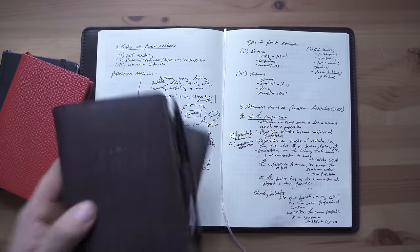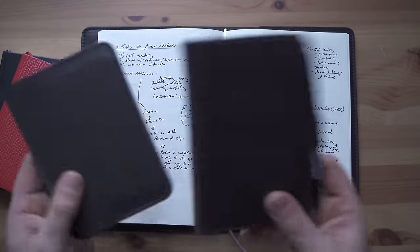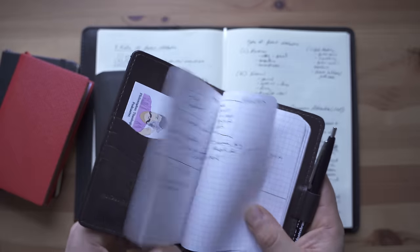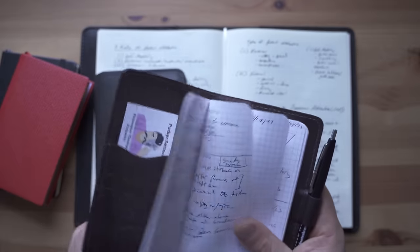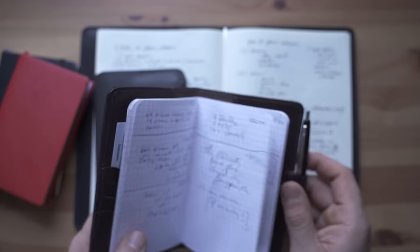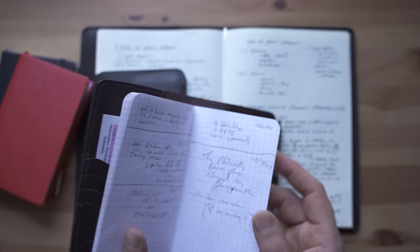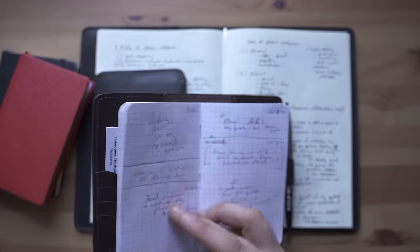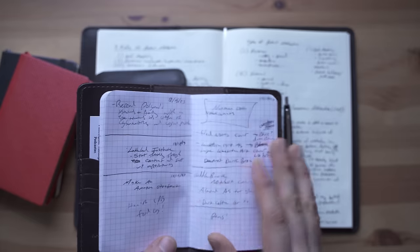So we already had an idea catch-all, but this is a true catch-all. This is for ideas when I don't have my idea catch-all, for tasks, for to-do lists, for feeding the dog, for daily tasks, for future tasks. Anything I don't want to forget is going in my general catch-all pocket notebook.